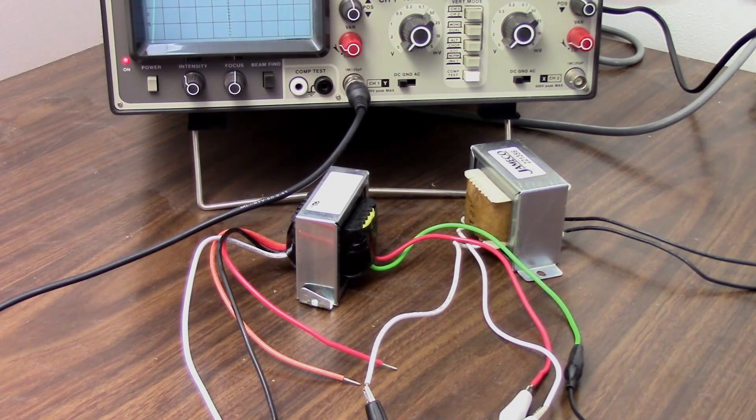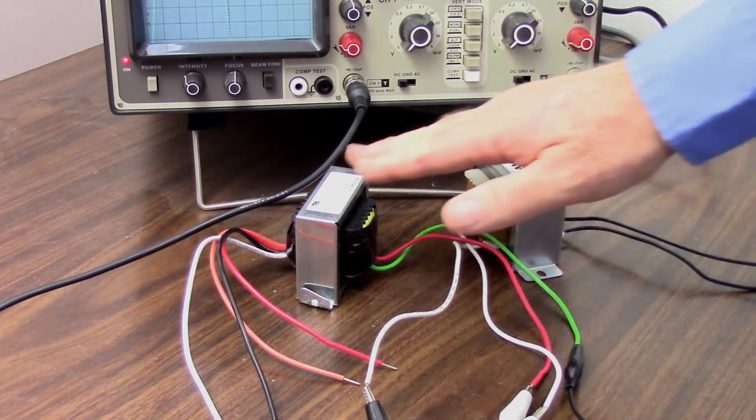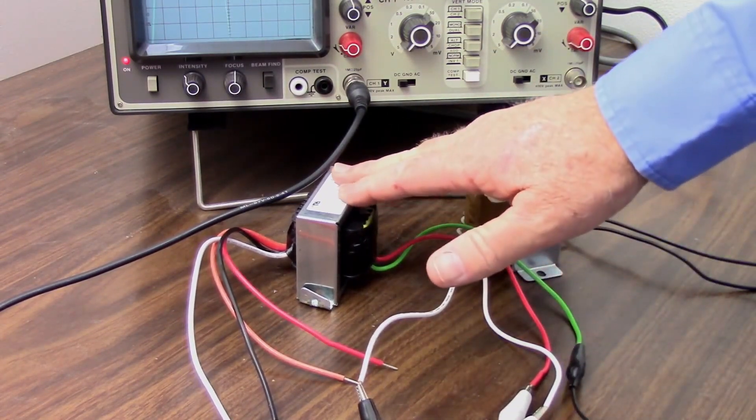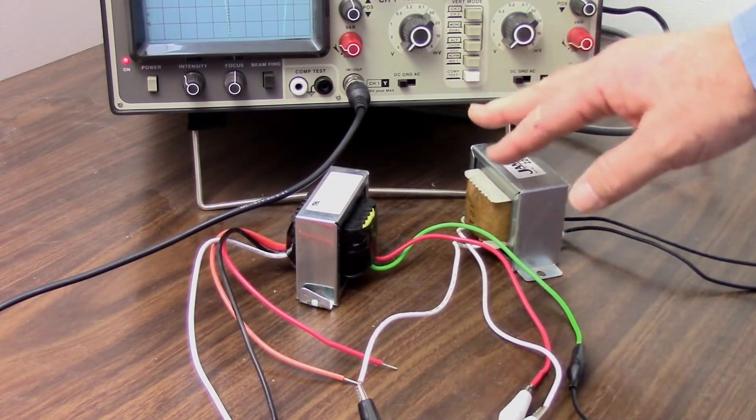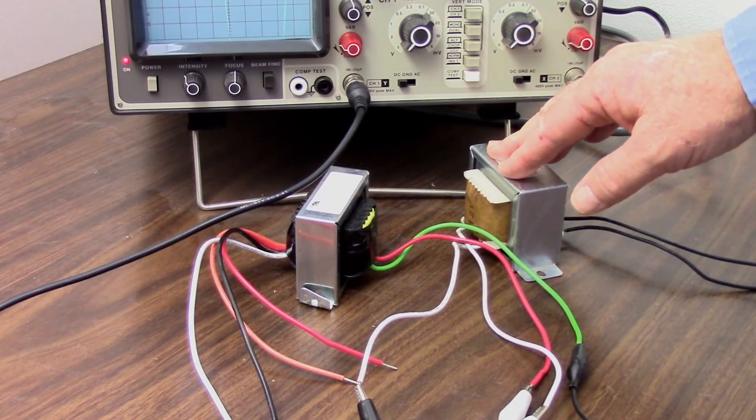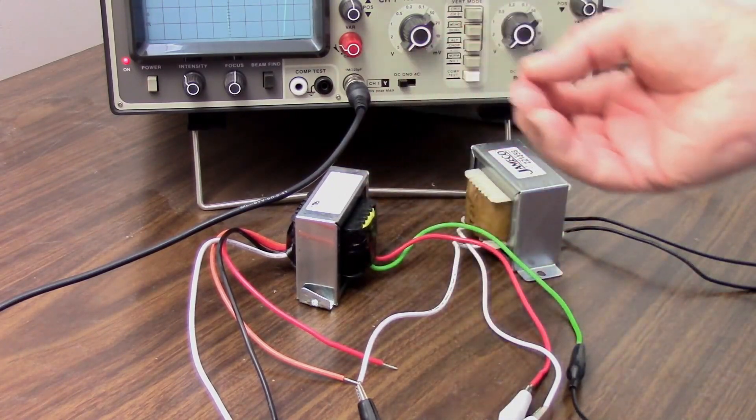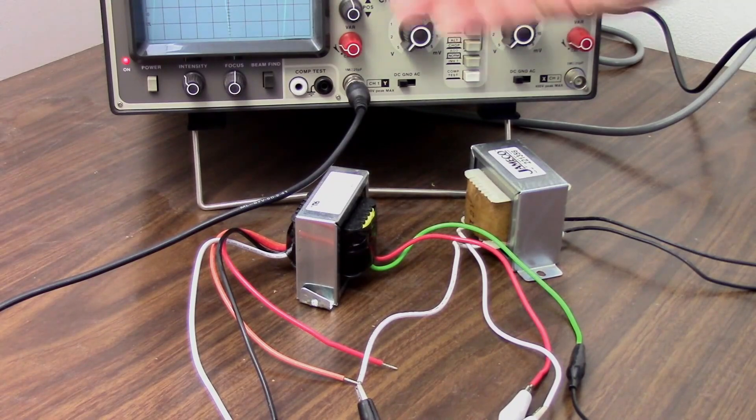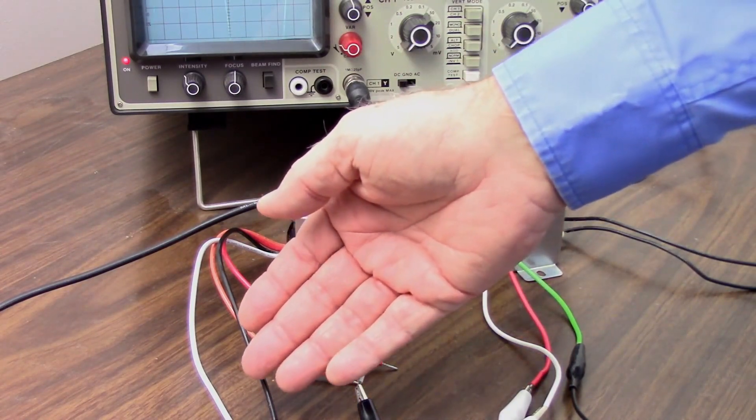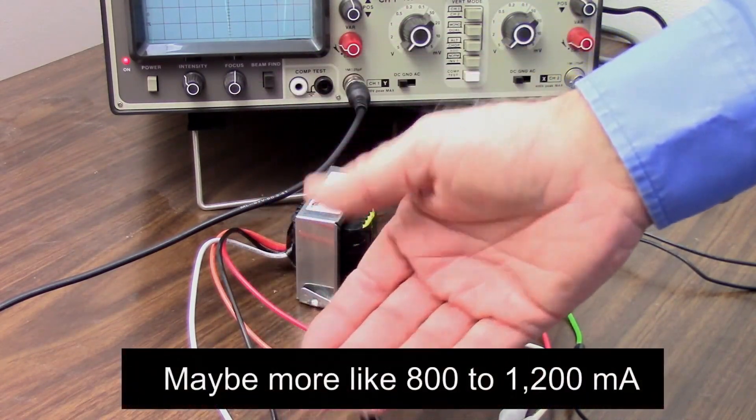And so just to keep things safe, I'm running my mains through these two transformers, stepping it down and stepping it back up. What that does is this transformer is maybe limiting me to four to six amps at the most, and when I step that back up, remember when you step the voltage up, your current capability goes down. And so I'm talking about maybe four to six hundred milliamps on the output of this.